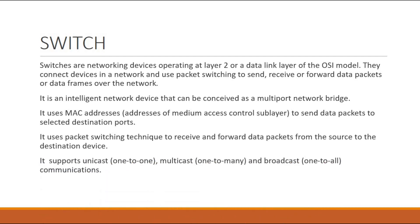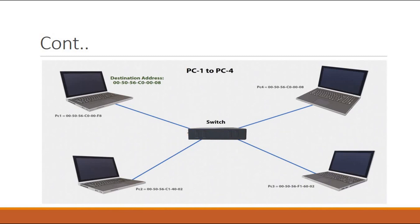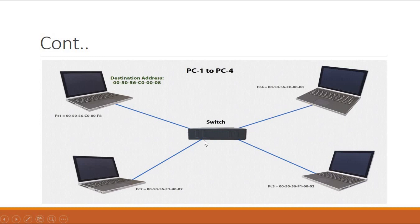Switch supports unicast, multicast, and broadcast. Unicast is one-to-one — if computer A is sending to computer B, that's unicast. Multicast is one sender to many. Broadcast is one-to-all. As shown in the diagram, PC1 is sending data only to PC4, and the data is not going to the other laptops. That's how switch works, and that's why we use switches today — because hubs have those disadvantages.